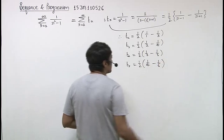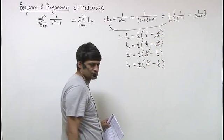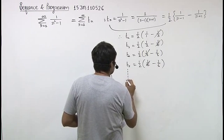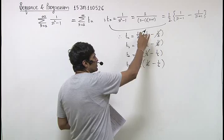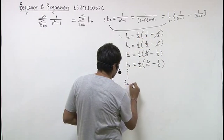So we can observe that terms are cutting like this. Starting from the beginning we can write 2 terms, and at the end we can write 2 terms to find out the sum. So let's try this.